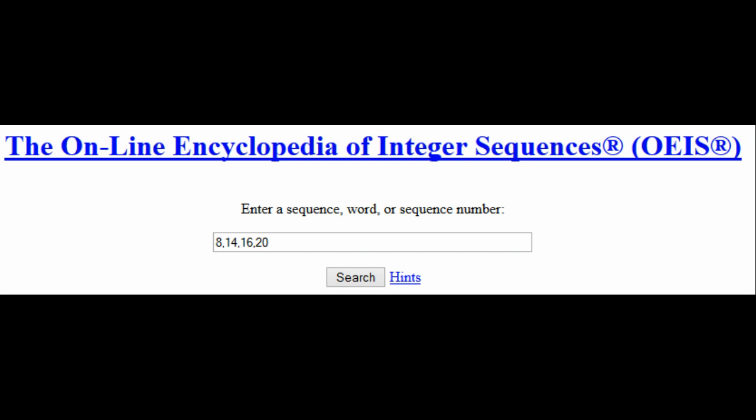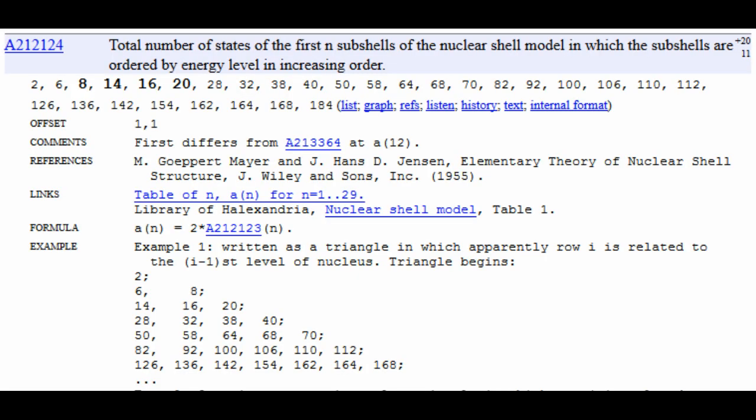So here's what I thought was interesting: total number of states of the first N subshells of the nuclear shell model. So 2, 6, 8, 14, 16, and 20 are the shells.